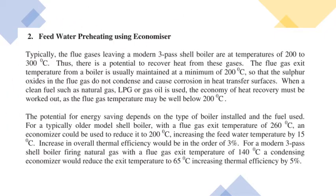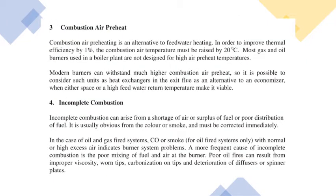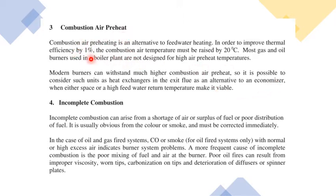The third point is combustion air preheating. Similar to the economizer, you can also install an air preheater to use the extra flue gas waste heat to preheat the combustion air. As a thermal rule, if the air temperature is raised by 20°C, boiler efficiency increases by 1%. Installing an air preheater is therefore another effective way to improve boiler efficiency.